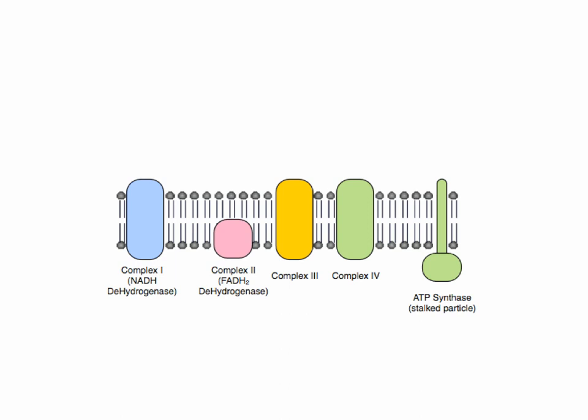We have complexes one to four and then we have ATP synthase which is an enzyme at the end which is used to produce the ATP. But what happens in electron transport?